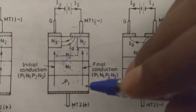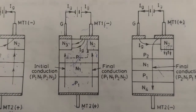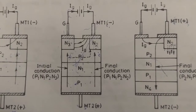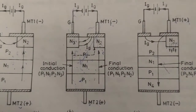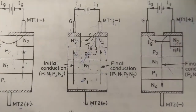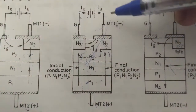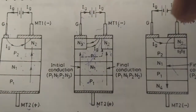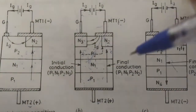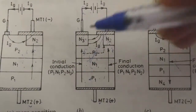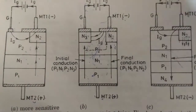This is the second mode of the turn-on process. Here MT1 is negative and MT2 is positive, as in mode 1. The only change is that the gate is negative. As the gate is negative, the gate current flow direction will be opposite to that of the first mode. Here P1-N1 is forward biased, P2-N2 is forward biased, P2-N3 is also forward biased, and N1-P2 is reverse biased.